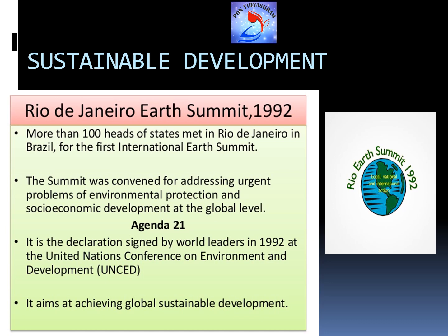The main aim of Agenda 21 is to achieve global sustainable development and to combat environmental damage, poverty, and disease through global cooperation on common interests. For example, we have a disease outbreak now where all global communities are coming together to address the issue — it is about how international communities work together. The ultimate aim is to have a future where development happens while the future is also protected.